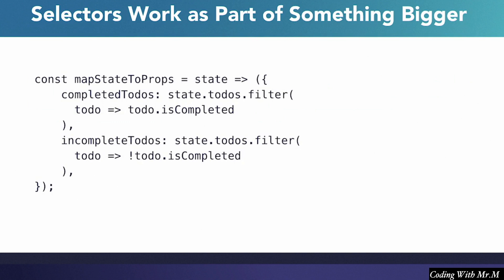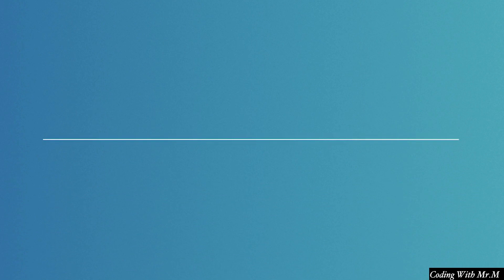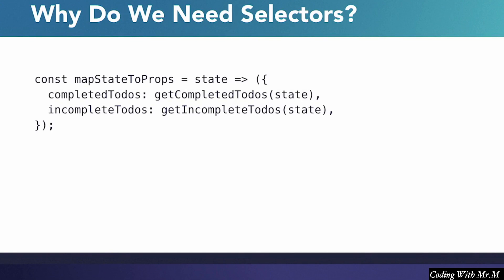Often times we want to pass our components data that requires a little bit of computation to obtain. For example, if we add separate to-do lists for completed and incomplete to-dos, this would require either our components or our MapStateToProps to include filtering logic, neither of which is ideal since it adds unnecessary complexity to our component files. This is another reason selectors exist — to give us a place to put logic for transforming data in the store into data our components can use. We could simply have selectors called getCompletedTodos and getIncompleteTodos, each containing filtering logic, and use these in MapStateToProps instead.